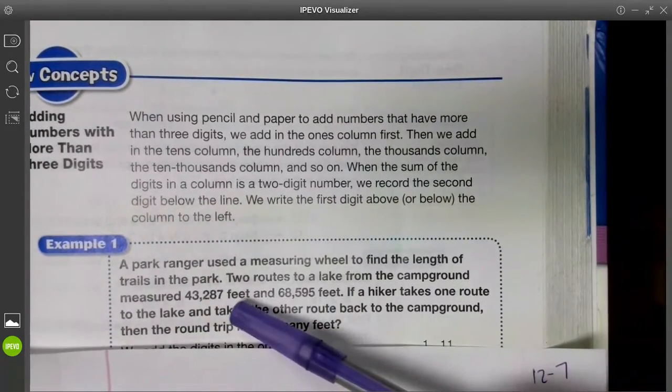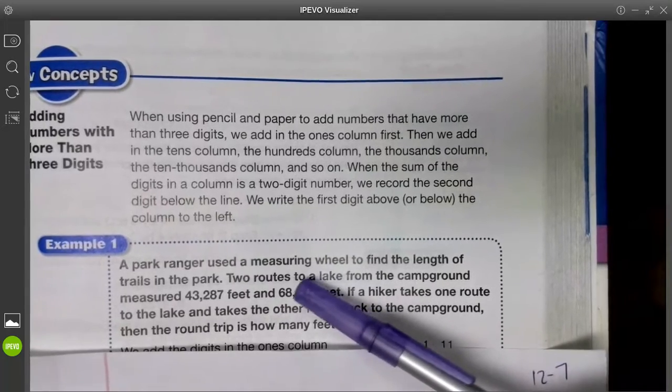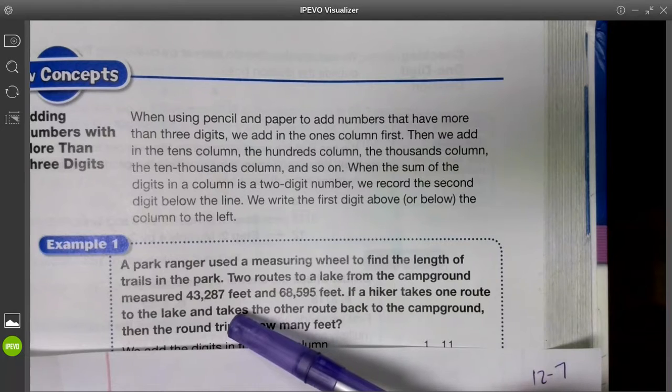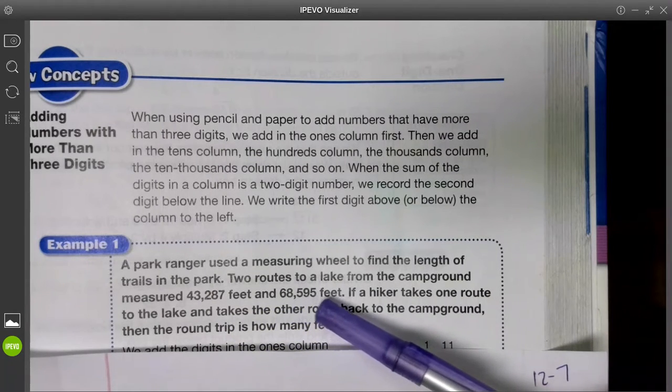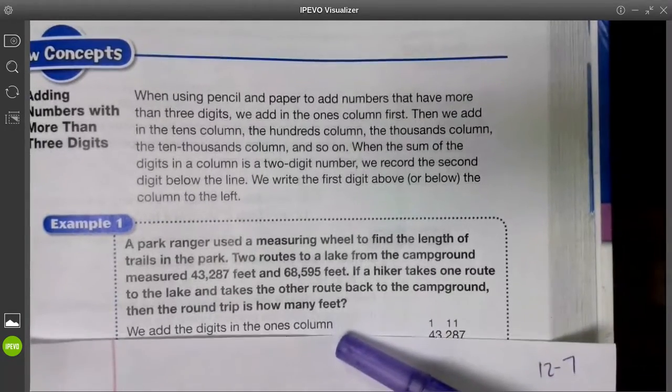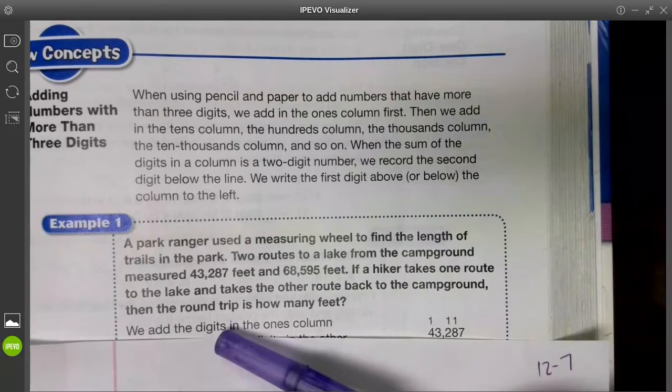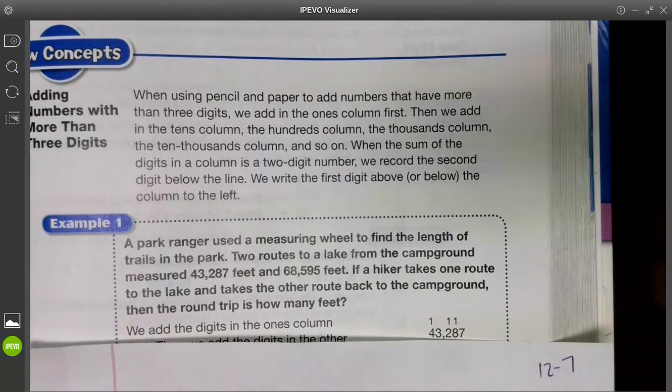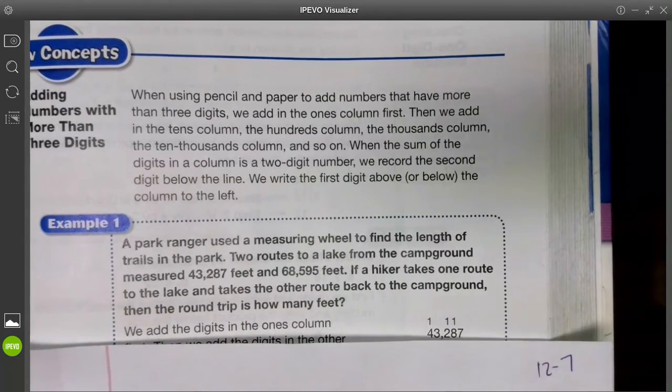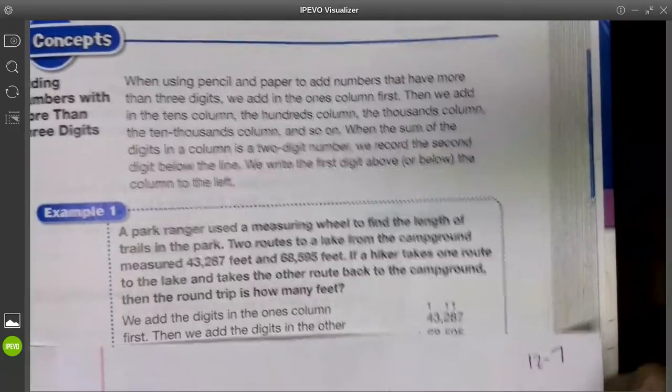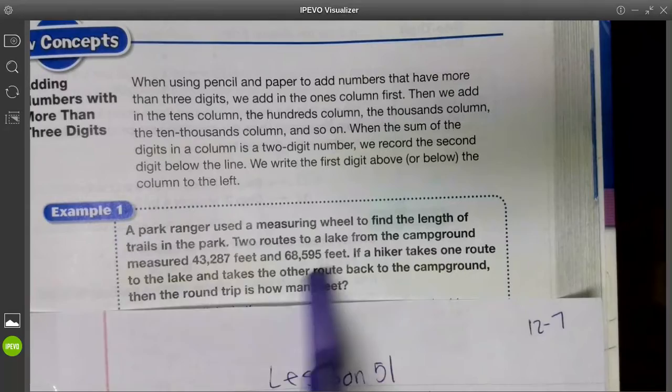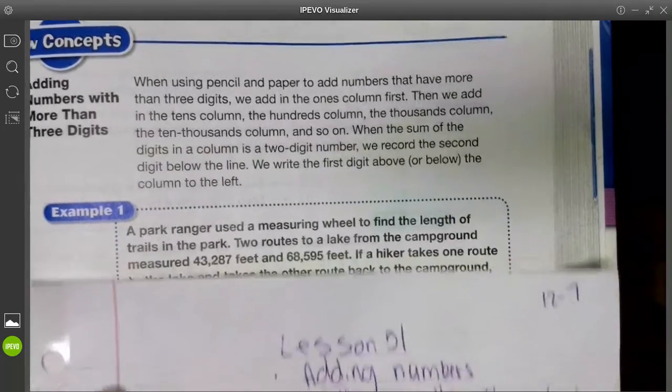Okay, so that's what we're talking about today. You got a story problem. A park ranger used a measuring wheel to find the length of trails in the park. Two routes to a lake from the campground measured 43,287 feet and 68,595 feet. If a hiker takes one route to the lake and the other route back to the campground, then the round trip is how many feet? So round trip means there and back. So if you go flying somewhere, you might buy round trip tickets going to Hawaii and coming back. Sometimes it's cheaper to do that.